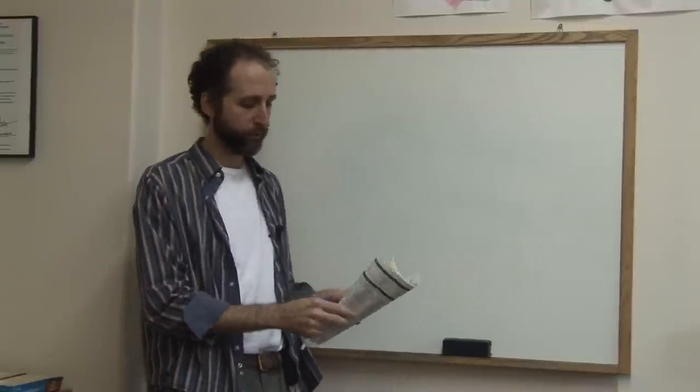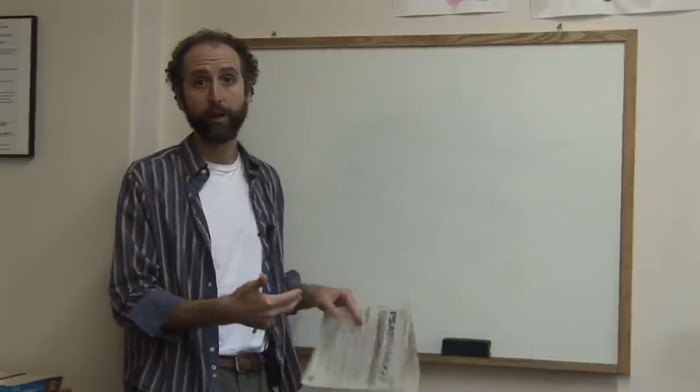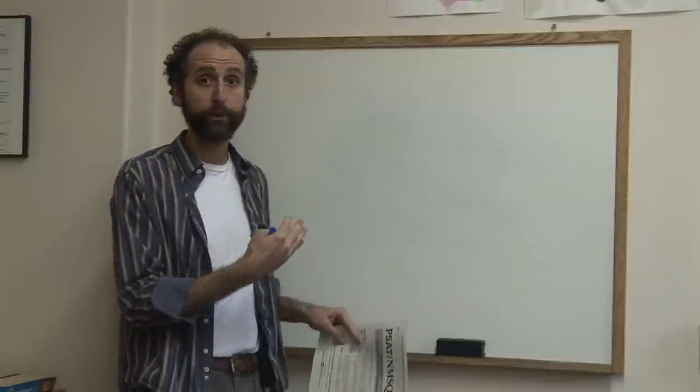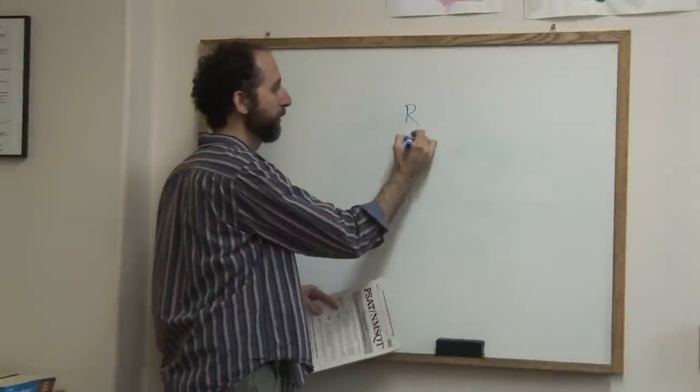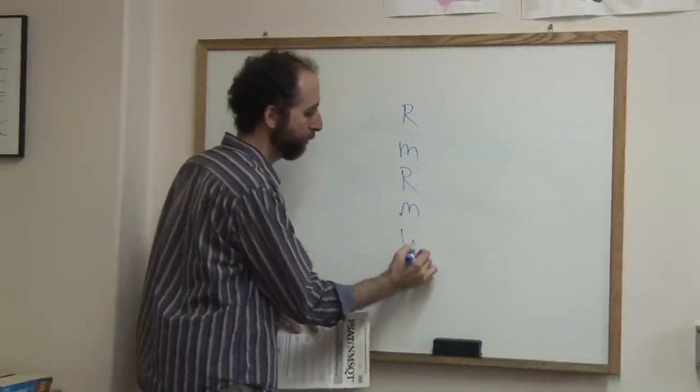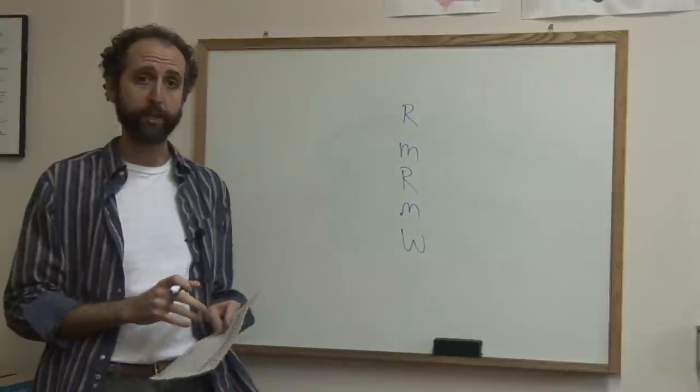You're going to go to the answer page where they give you the answers, and you're going to check over your section. The PSAT has five sections: a reading, a math, a reading, a math, and a writing. Those are the five sections of the PSAT.